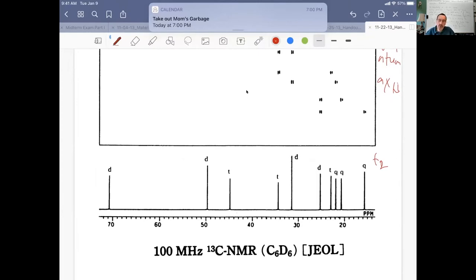You would partially irradiate the protons so that carbons with one hydrogen would split into a doublet. In other words, a methine would be a doublet. Carbons with two hydrogens attached would split into a triplet, so a methylene group would be a triplet. And carbons with three hydrogens attached, a methyl group, would be a quartet.